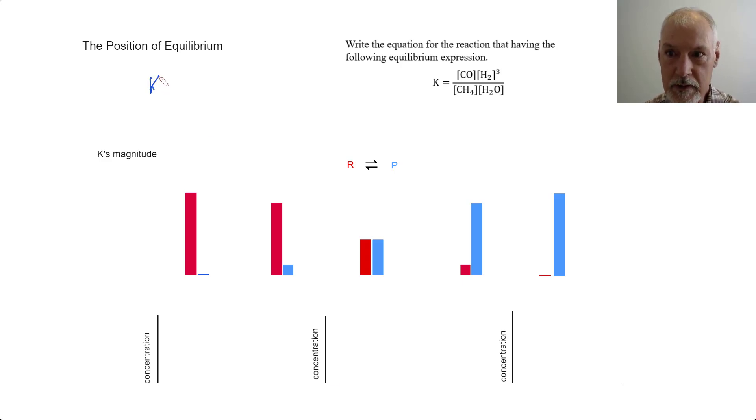In general terms, the equilibrium constant is equal to the concentration of our products divided by the concentration of our reactants.